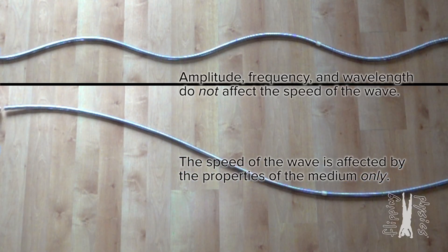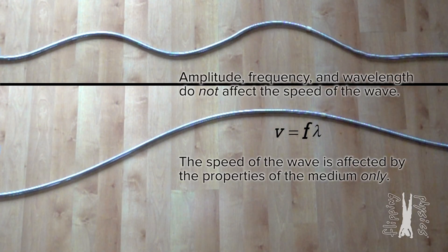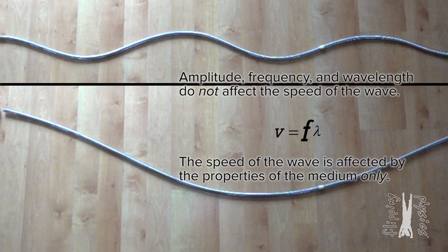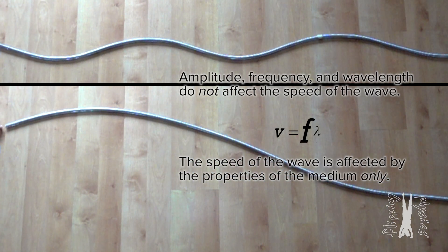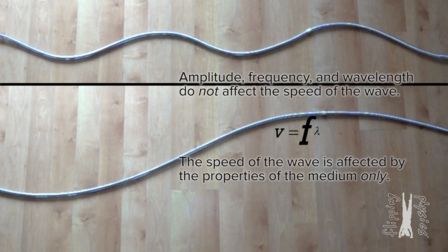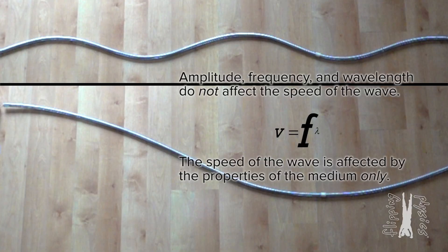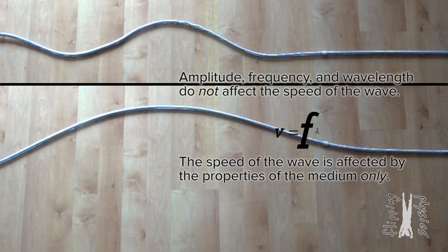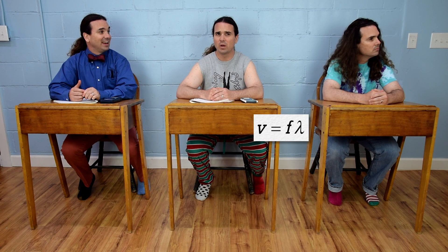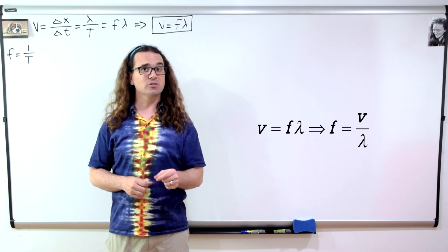But if the frequency increases, according to that equation, the speed of the wave should also increase, right? I can see how you would think that, but that is not what happens. If the frequency of a wave increases, then the wavelength of the wave decreases because the velocity of the wave stays constant as long as the properties of the medium stay constant. The wavelength of the top wave in the demonstration is smaller than the wavelength of the bottom wave, and the frequency of the top wave is larger than the frequency of the bottom wave — and that keeps the speed constant. So the frequency and wavelength of a wave are inversely related to one another.